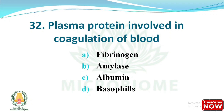Question: Name the protein involved in coagulation of blood. Options: fibrinogen, amylase, albumin, and basophils. The right answer is option A - fibrinogen.